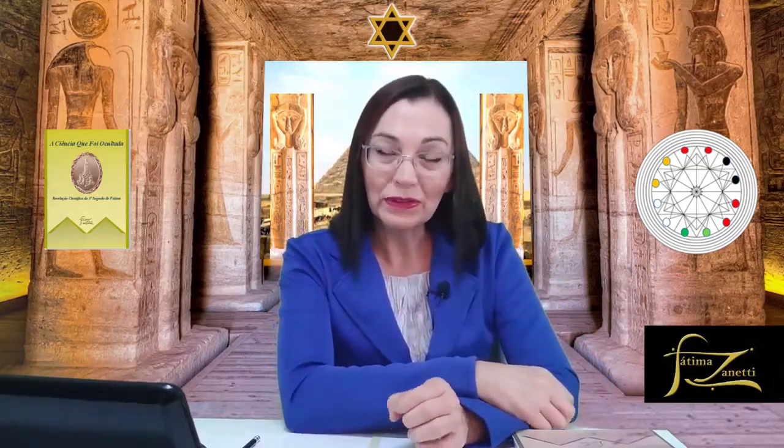Observa o gráfico que está aqui. Ele tem vários pontos coloridos. Isso representa os cinco elementos da medicina chinesa. Na verdade, não são cinco — são seis. É sobre o sexto elemento. Na medicina chinesa, nós temos cinco elementos fundamentais: o elemento água, que está relacionado a rim e bexiga.